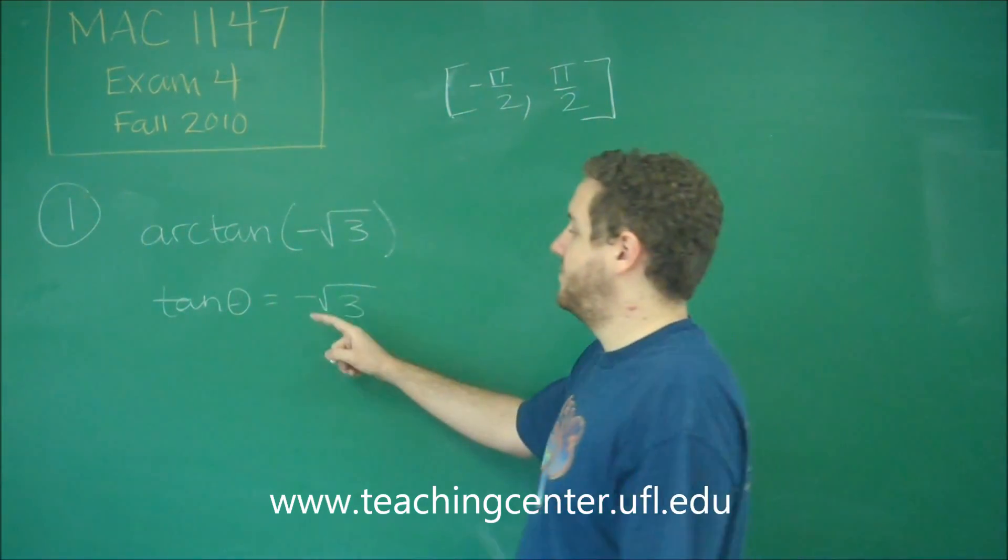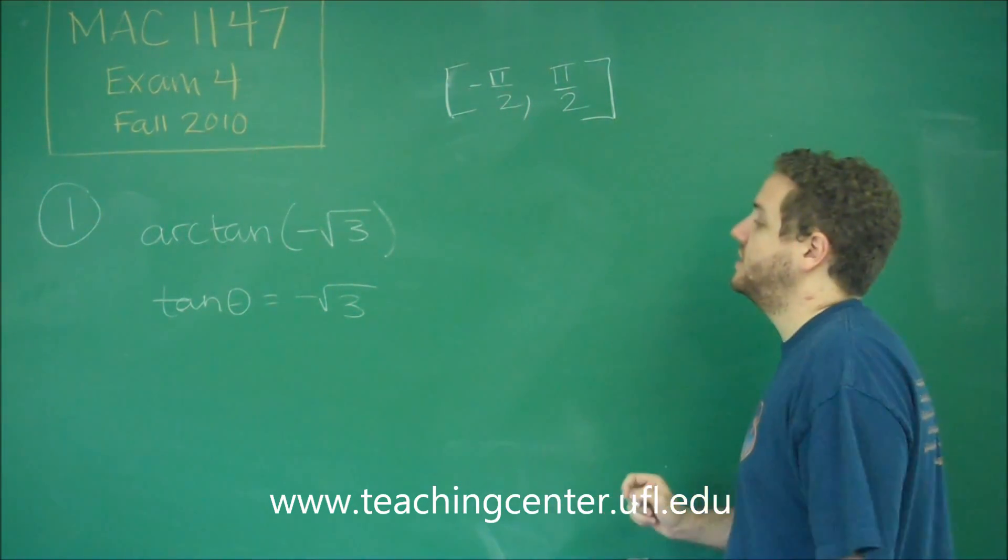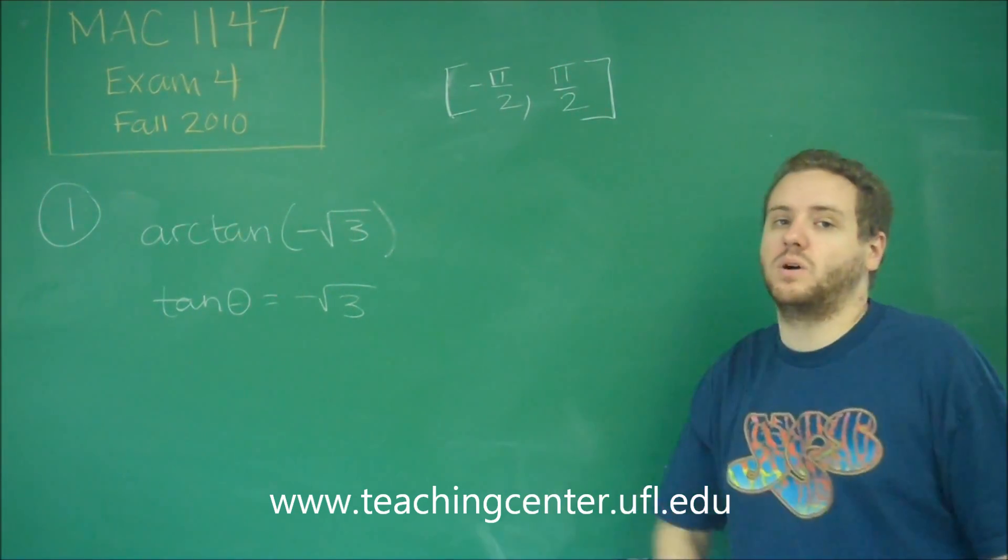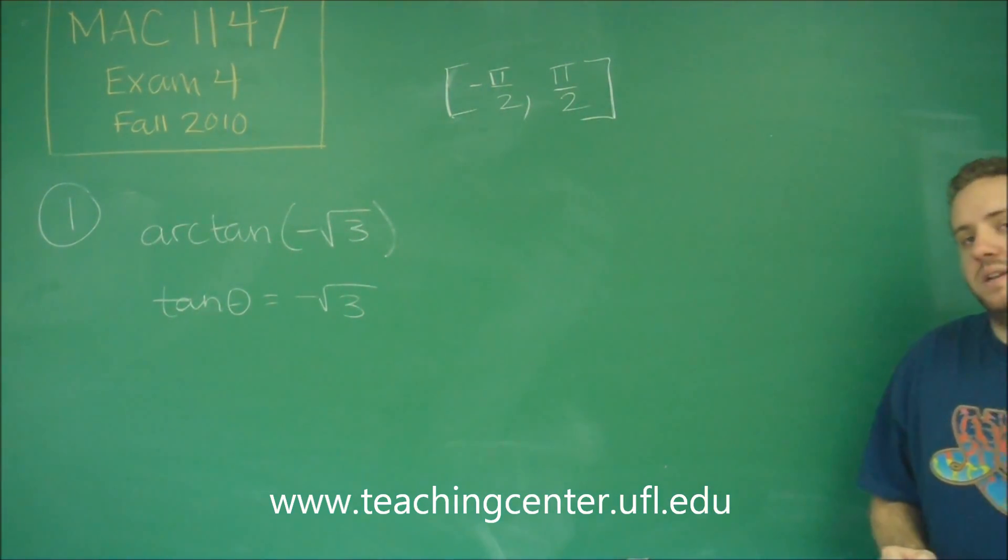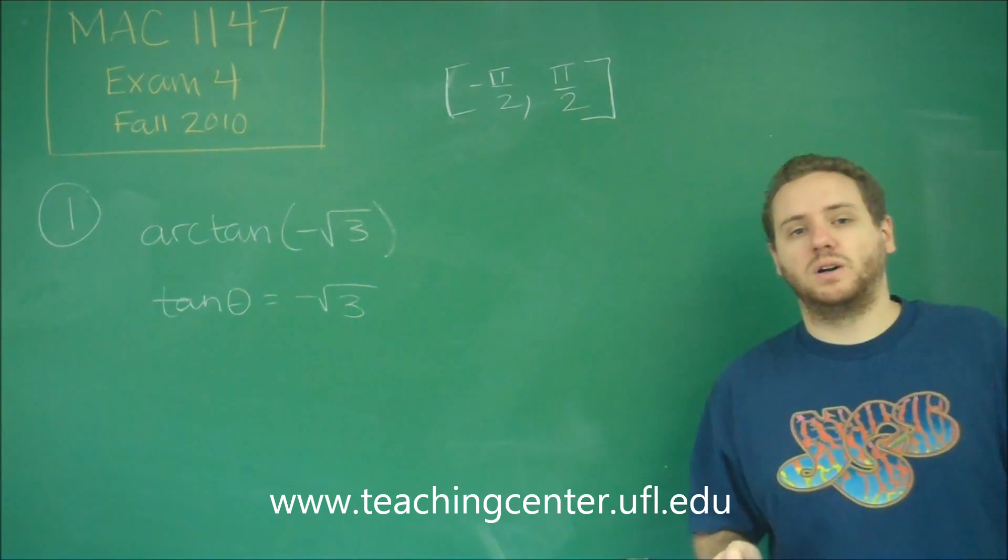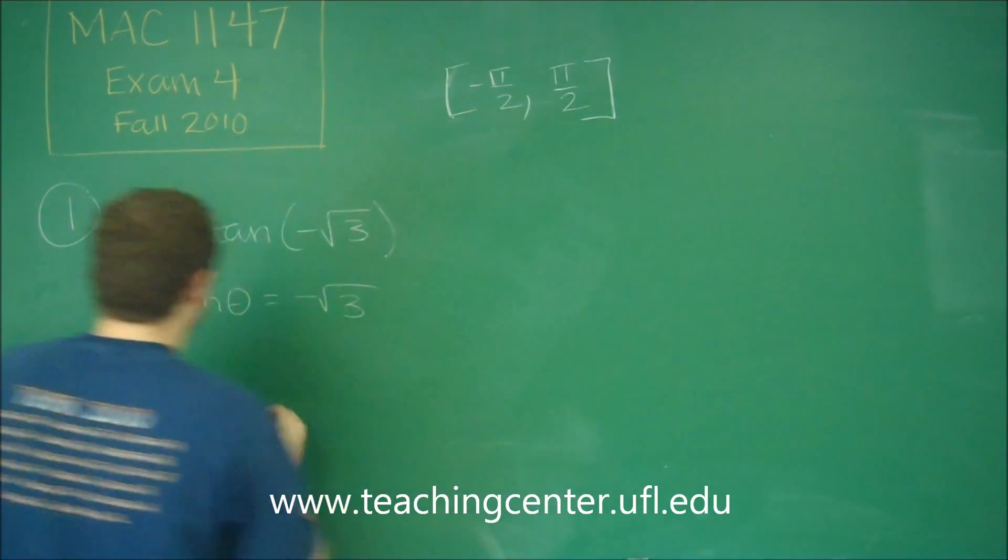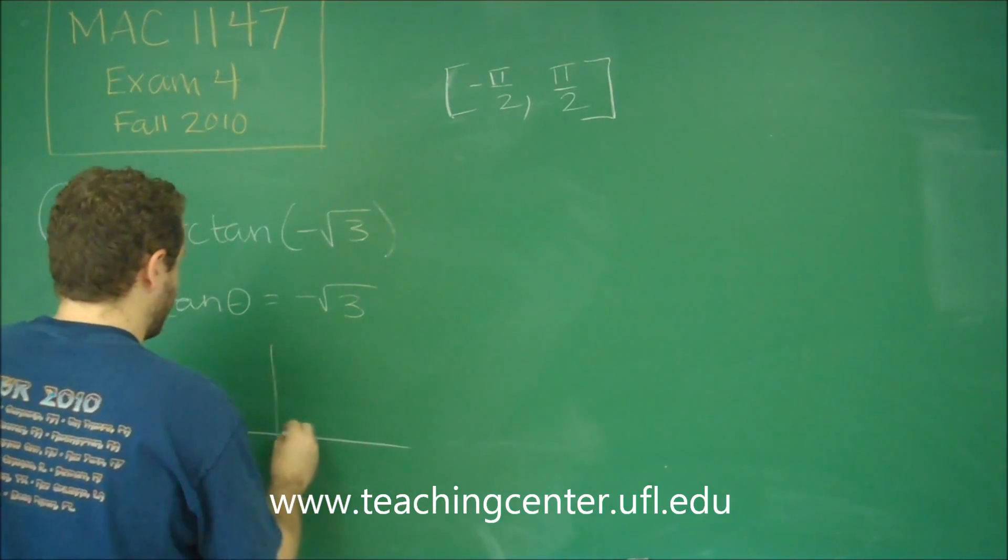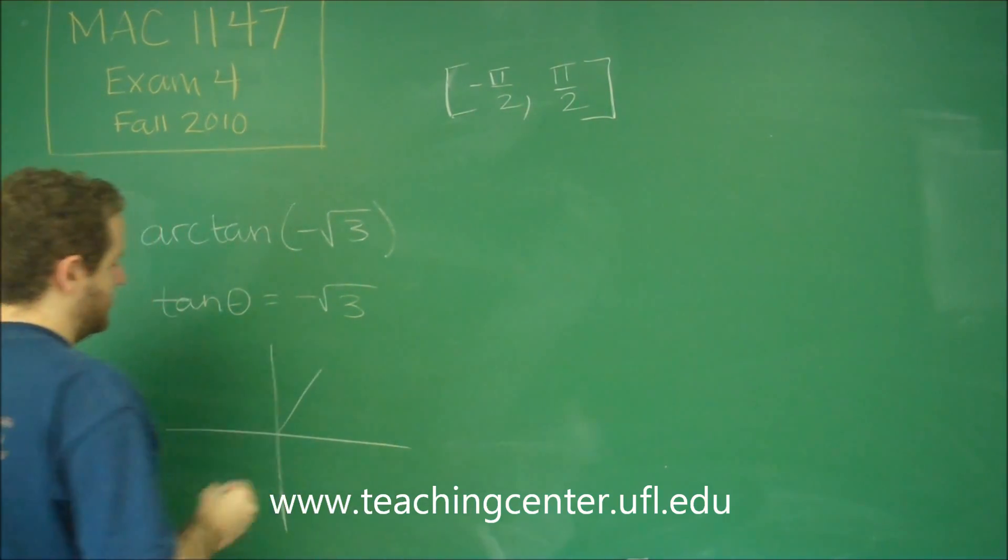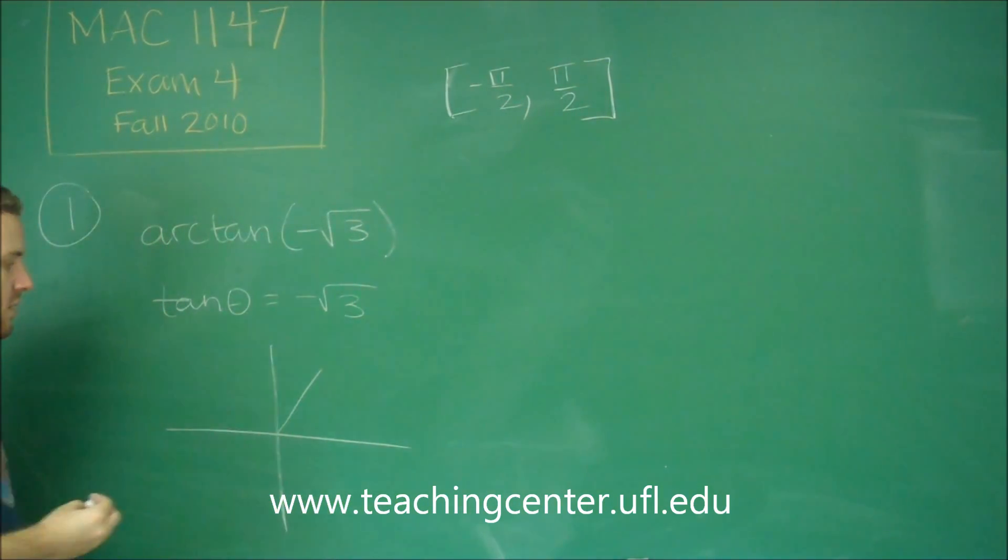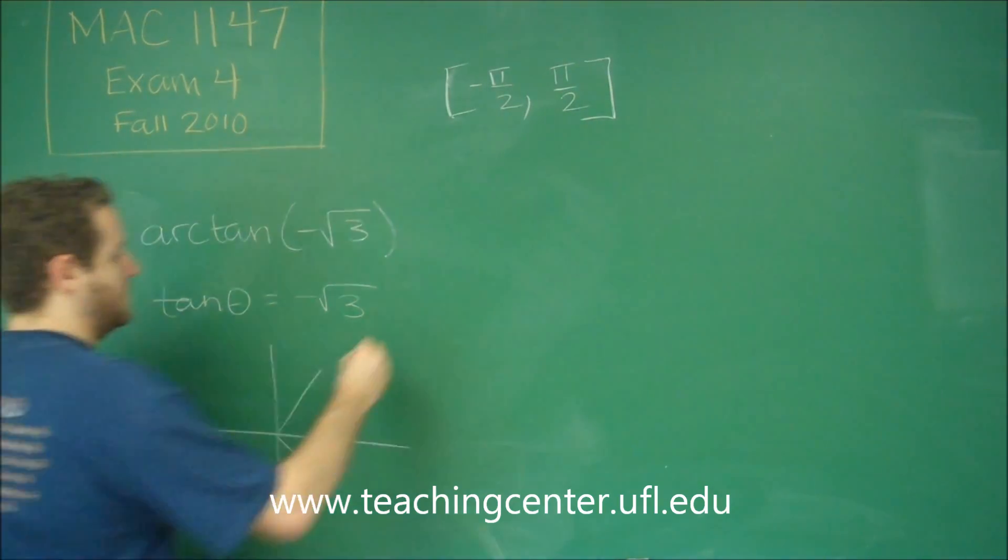But it's negative. So the tangent, if you can only be in the first or fourth quadrants, think about where is tangent negative? Well, it's definitely negative in the fourth quadrant. So we have pi over three, but in the fourth quadrant. So if you want to draw that out here. Pi over three is somewhere there. But this angle right here gives you the same tangent as in the fourth quadrant. That's negative pi over three.